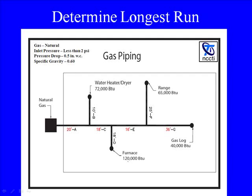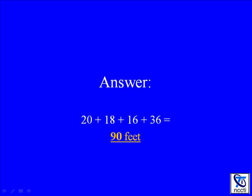For this lesson, to determine the longest run, simply add up the numbers in red. The correct answer is 90 feet. Once the longest run has been determined, this figure is used to identify the correct row in the table. More on this later.